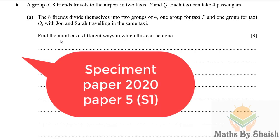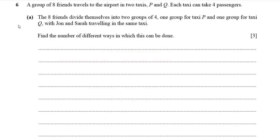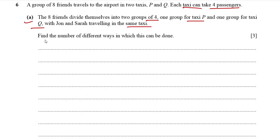Hello and welcome back to my channel. Today we are going to discuss the last two questions from the specimen probability and statistics paper, that is paper five. Question number six: a group of eight friends travels to the airport in two taxis, P and Q. Each taxi can take four passengers. Part a: the eight friends divide themselves into two groups of four, one group for taxi P and one for taxi Q, with John and Sarah traveling in the same taxi. Find the number of different ways this can be done.